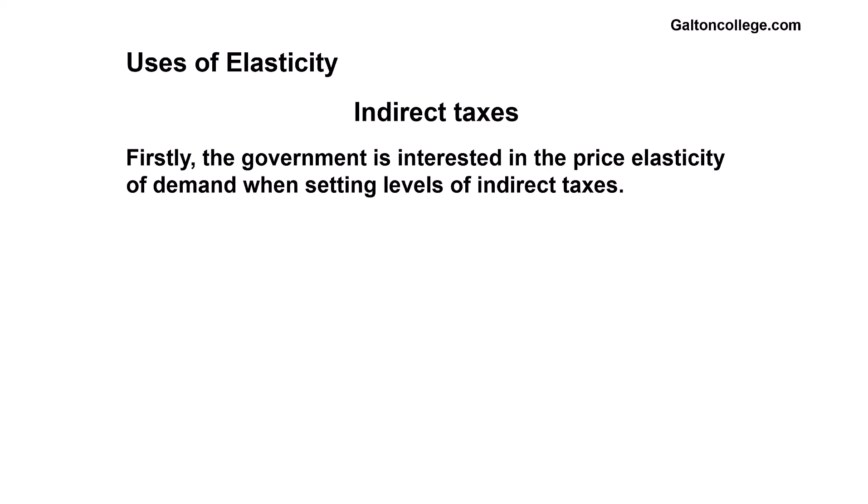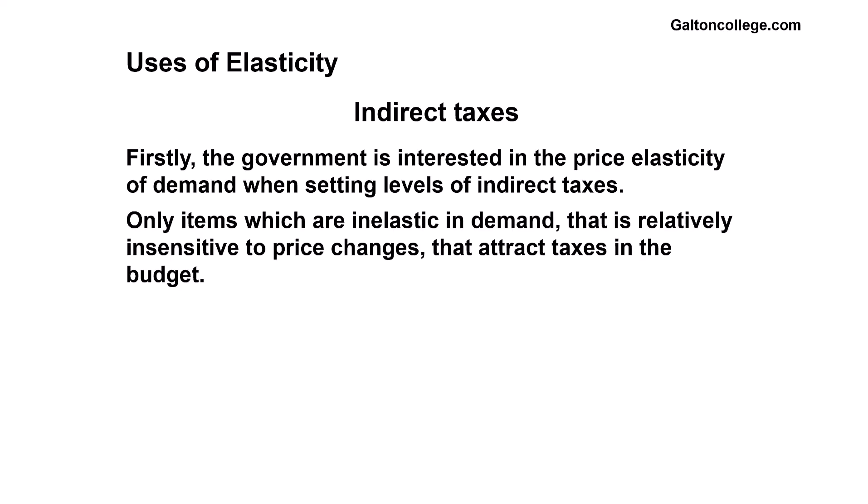The government is interested in the price elasticity of demand when setting levels of indirect taxes. Some items they will increase. Mostly items which are addictive, like tobacco. Tobacco is bad for our health and is perhaps not as important nowadays as it was in the past. But in the past, when lots of people were addicted to it, the government could increase the tax on tobacco, and it was a good way of getting money for the government. Alcohol is another one, or petrol. If the government increases the price of petrol, adds some tax on it, people generally have to buy it if they've got petrol cars. Only items which are inelastic in demand, that is relatively insensitive to price changes, that attract taxes in the budget.